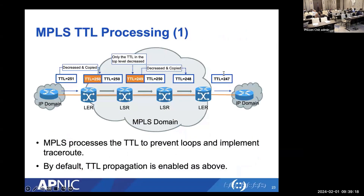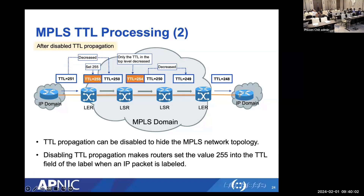Like IP routing, MPLS uses Time To Live (TTL) for loop prevention. There is a TTL propagation setting that determines whether to copy the IP TTL to the MPLS TTL at ingress and copy it back at egress. TTL propagation is enabled by default in Cisco IOS. When enabled, MPLS routers and labels along the path are visible in traceroute output. It can be disabled to hide the MPLS network topology — the user would still see PE routers but not the P routers.